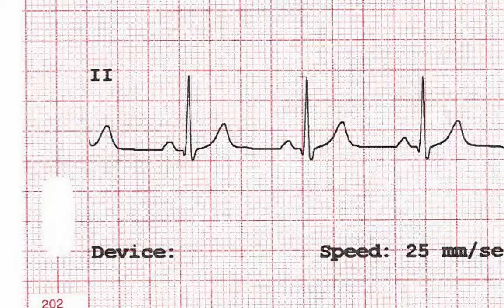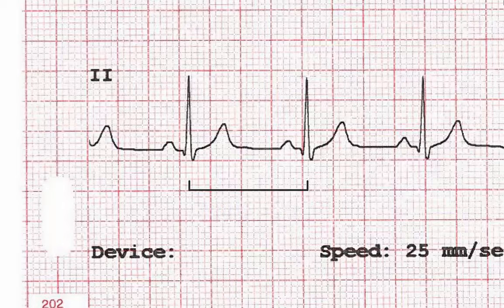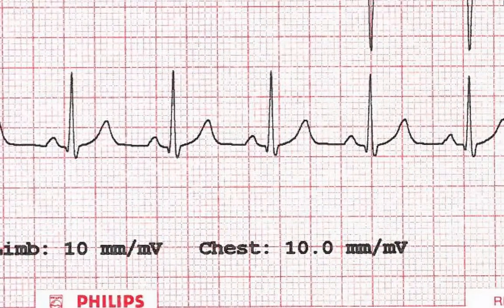This is done with a simple rule of thumb. You take the number of large squares between two heartbeats. Here there are four large squares between these two complexes, and you divide 300 by that number. 300 divided by 4 is 75, so the patient's heart rate is 75 beats per minute. This rule of thumb only works, however, if the patient's heart rate is very regular.